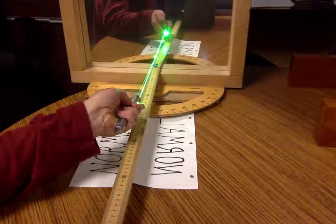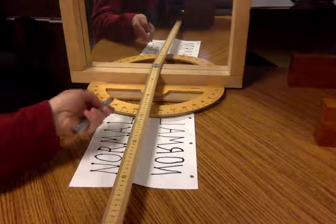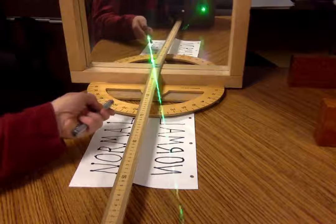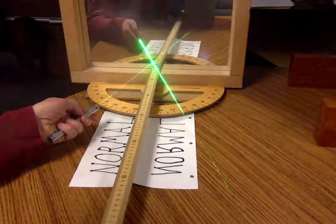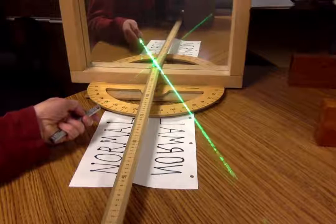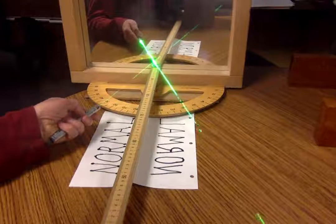So that's funny. Let's go away from the normal, maybe 10 degrees, 20 degrees away. And I find that the outgoing beam is also 20 degrees away from the normal.